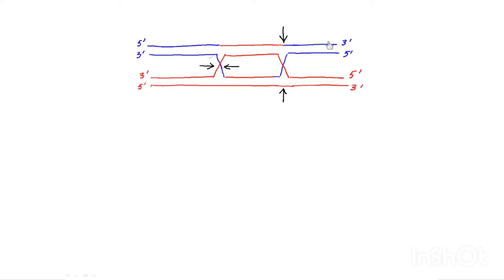Now imagine that you have a genome where there are homologous sequences scattered throughout. Let me give you an example — this did happen to the beta globin gene. Suppose you have a beta globin gene surrounded by repeated sequences. I'm going to draw for you a beta globin gene — here is a beta globin gene, and it's surrounded by repeated sequences.